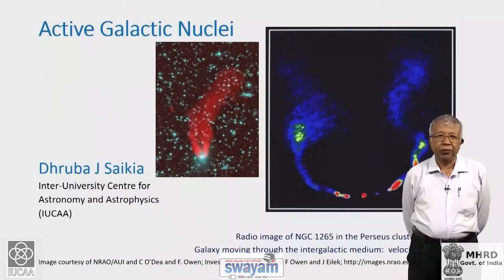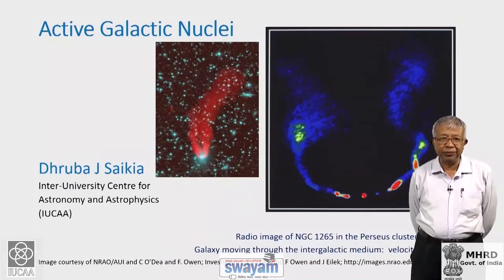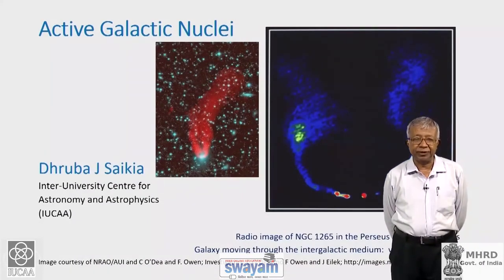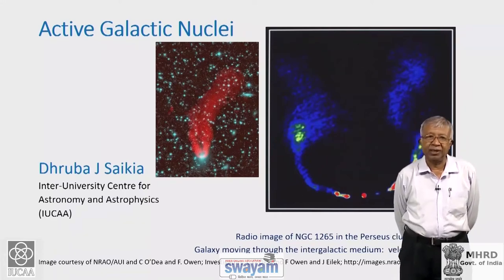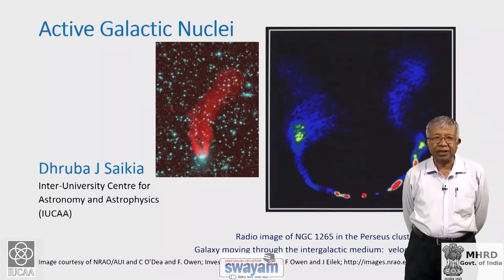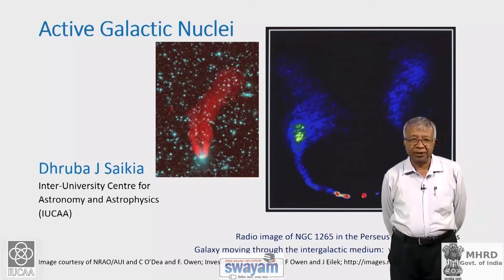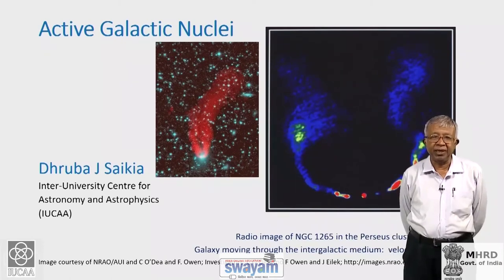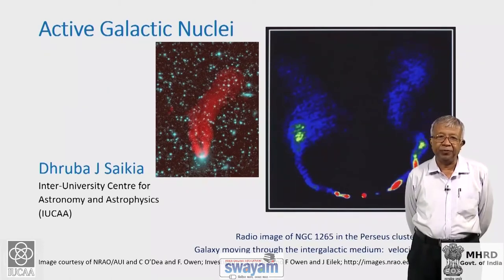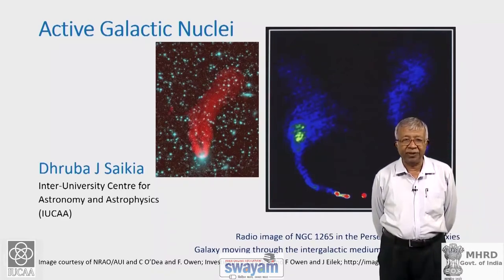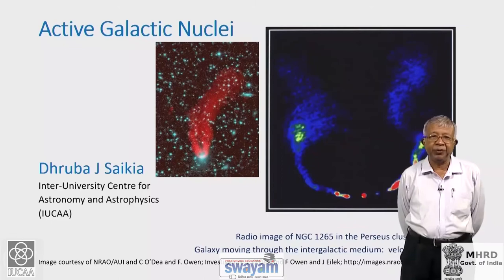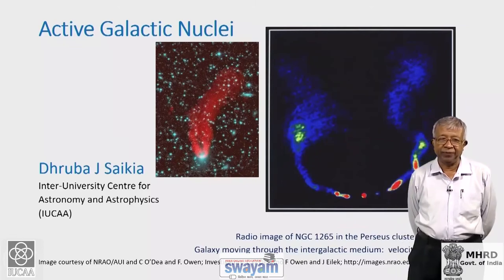In this lecture, we will first continue with the structures of radio galaxies and quasars which we met in the previous lecture, then look at particular aspects of these radio sources, and later move towards what is called a unified scheme of the diversity of active galaxies which we were introduced to in the previous lecture.